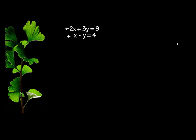And that's good because if I multiplied this equation by 3, I would get a negative 3y here. Now let me show you what's going to happen. I'm going to multiply the second equation by 3. So I'm going to have 3x minus 3y equals 12.